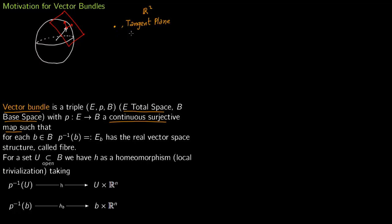So here you can see that this point is on the sphere so you could have a continuous surjective map back to your sphere. This point was taken on the sphere. And for each b in the base space, P inverse of b you define it as E_b. This has a real vector space structure which is called a fiber.